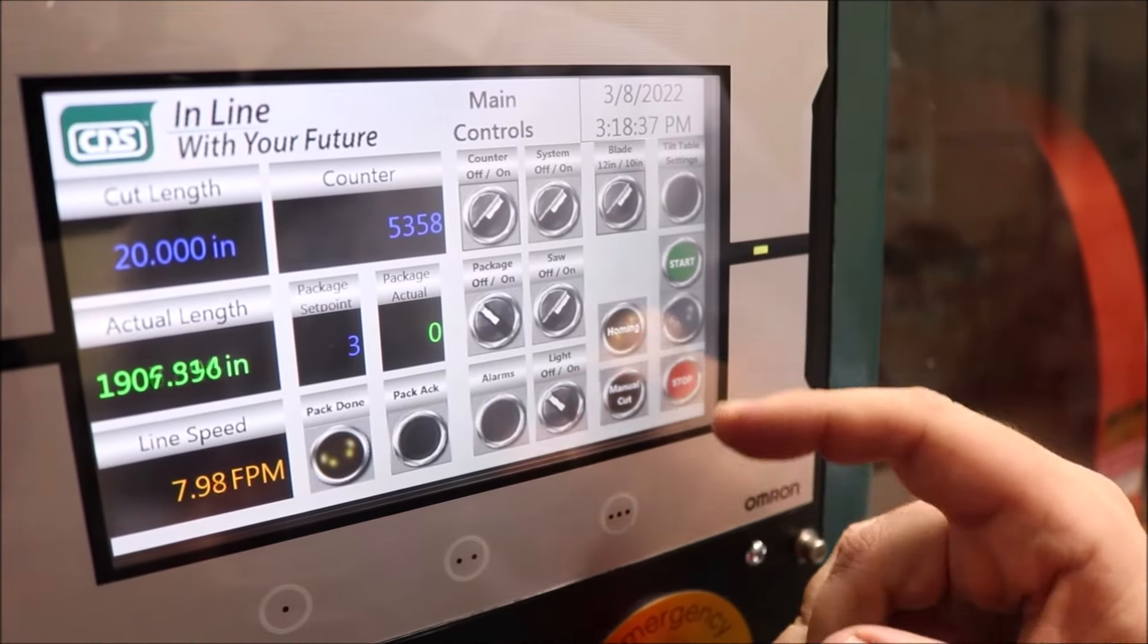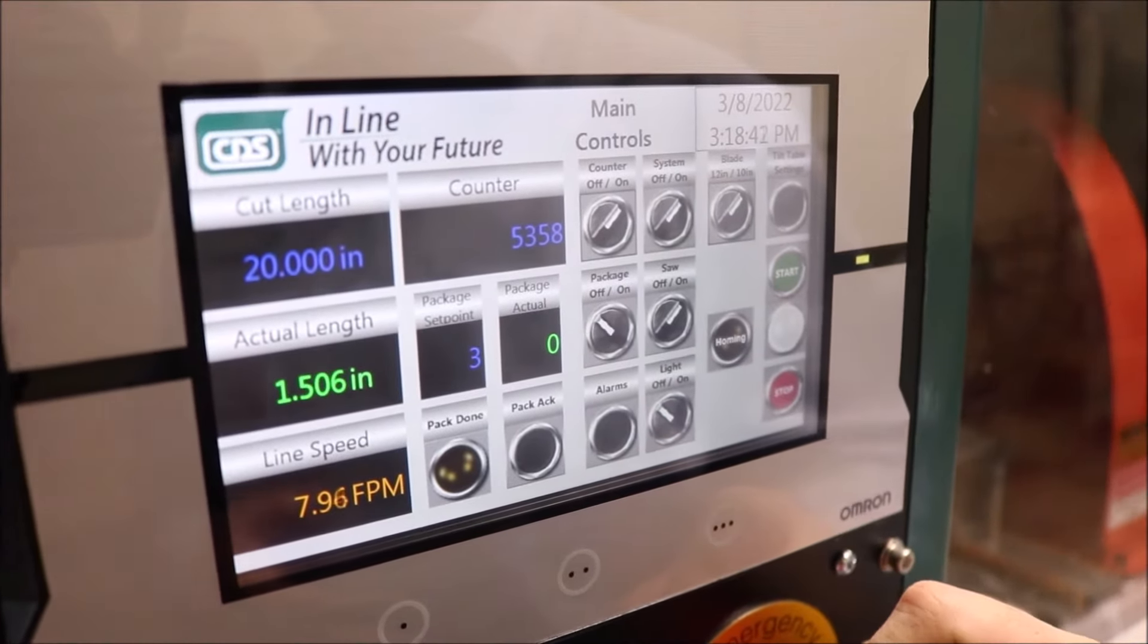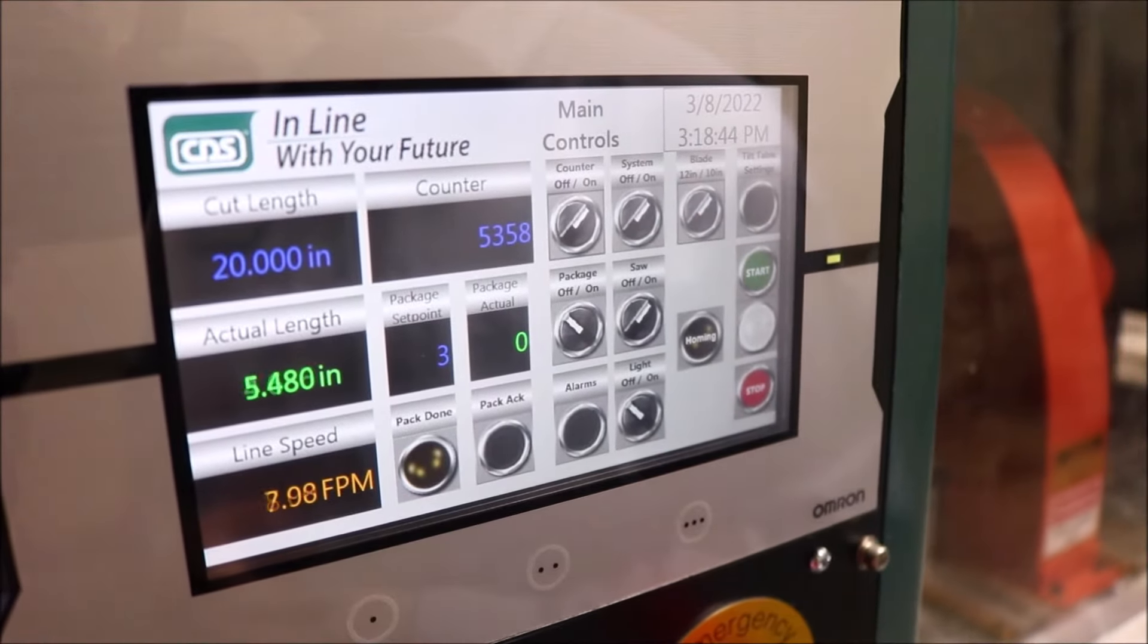Once the machine is in the home position, the home button will disappear and we will be able to start the machine. At this point the machine is running automatically.